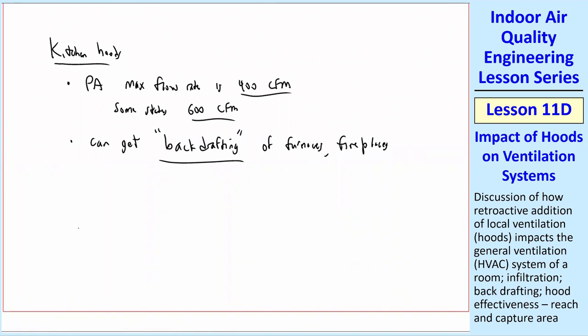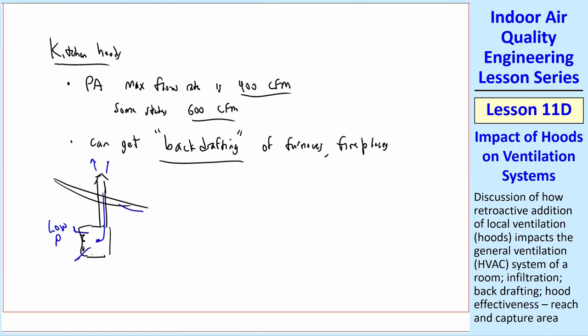Back drafting is when you have a fireplace or a wood burner stove with a chimney that goes outside. Of course, the air is supposed to go out like that when you're burning the wood. But if you have a significantly low pressure in the house, you can actually get the air coming down backwards and then leaking out.